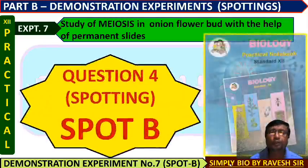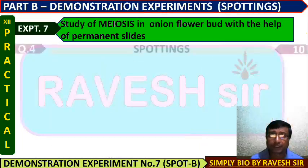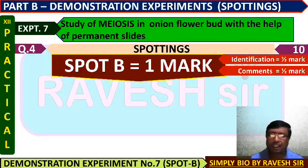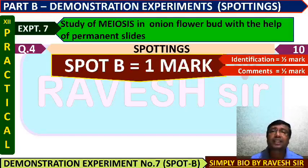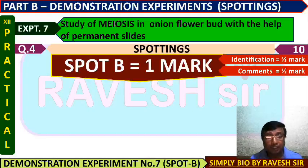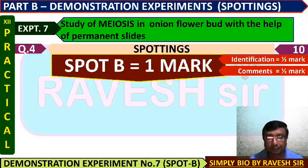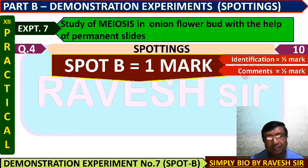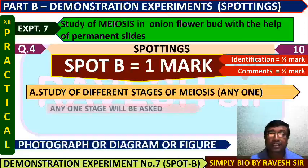Question 4, Spot B, from the biology practical notebook standard 12. Spot B is for one mark — half a mark for identification of the stage — and one mark for the study of different stages of meiosis.